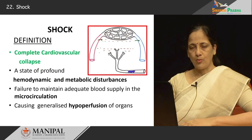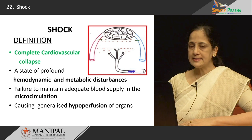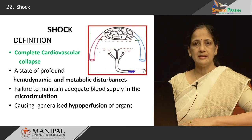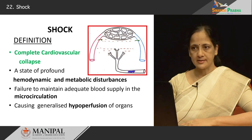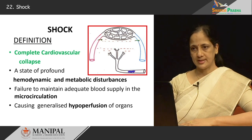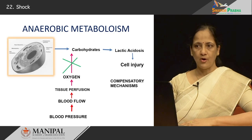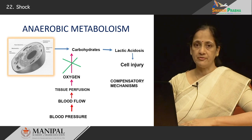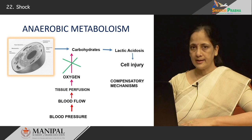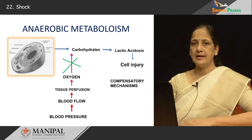In shock, what happens is that there is complete cardiovascular collapse, meaning blood supply to each and every organ and tissue is affected. Therefore, there will be a state of profound hemodynamic and metabolic disturbances characterized by failure to maintain adequate blood supply to the microcirculation. This causes generalized hypoperfusion of the organs. If tissue perfusion ensuring oxygen supply for glycolysis is absent, lactic acidosis results and cell injury occurs.